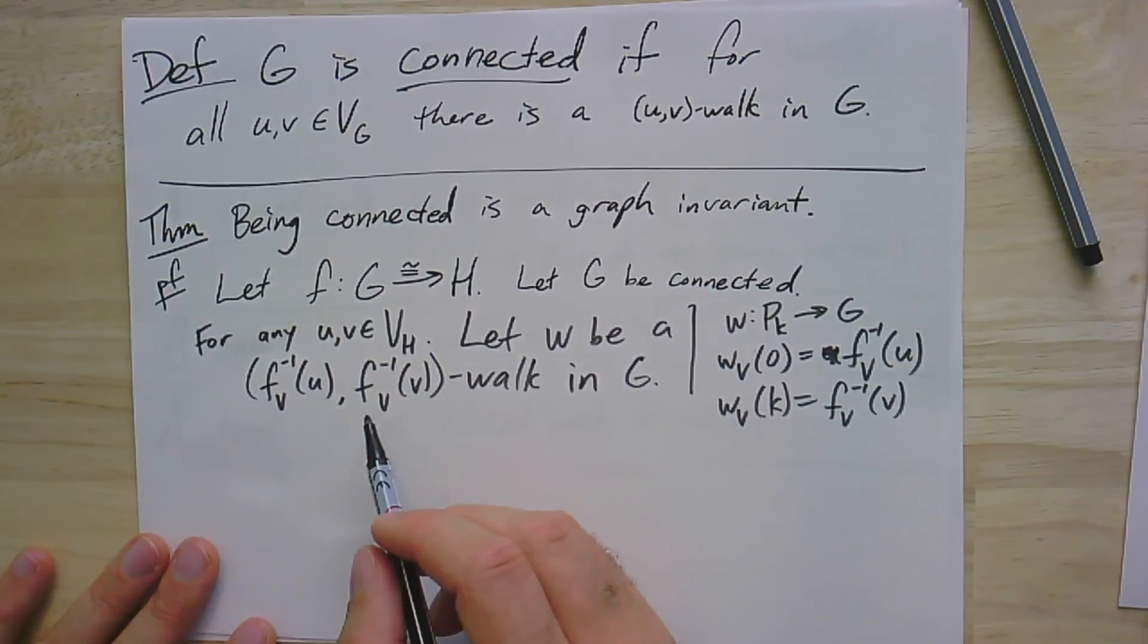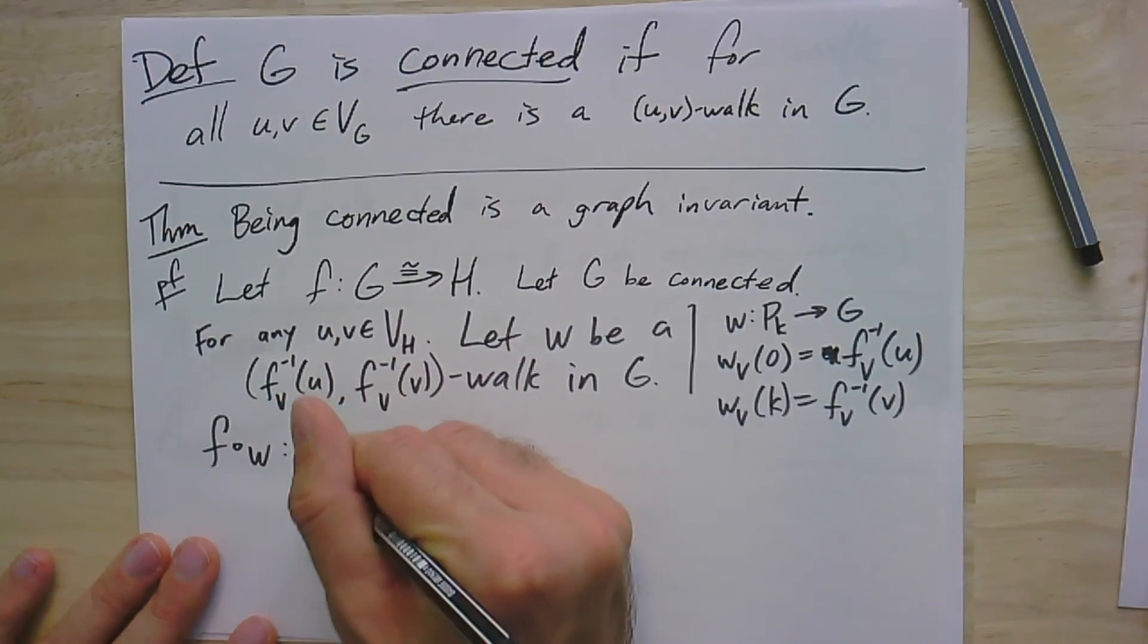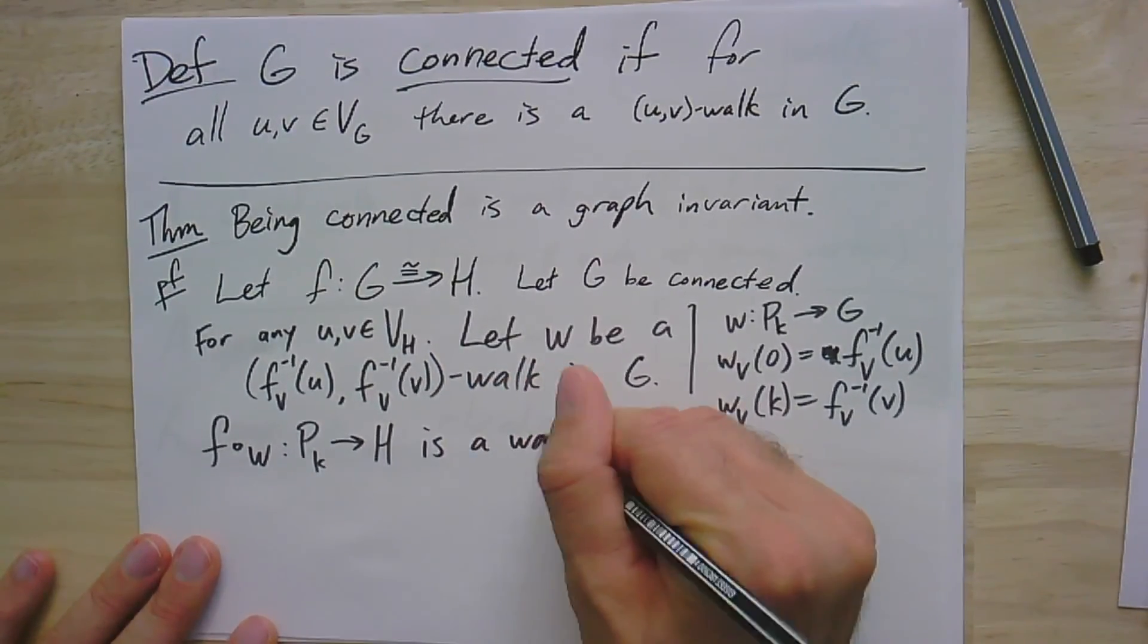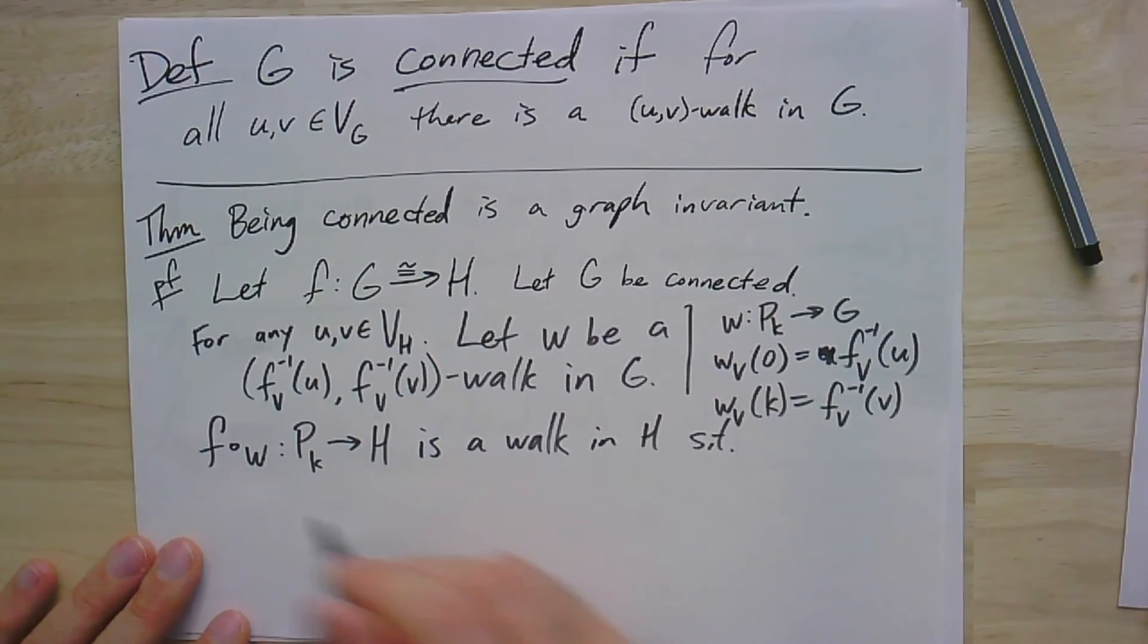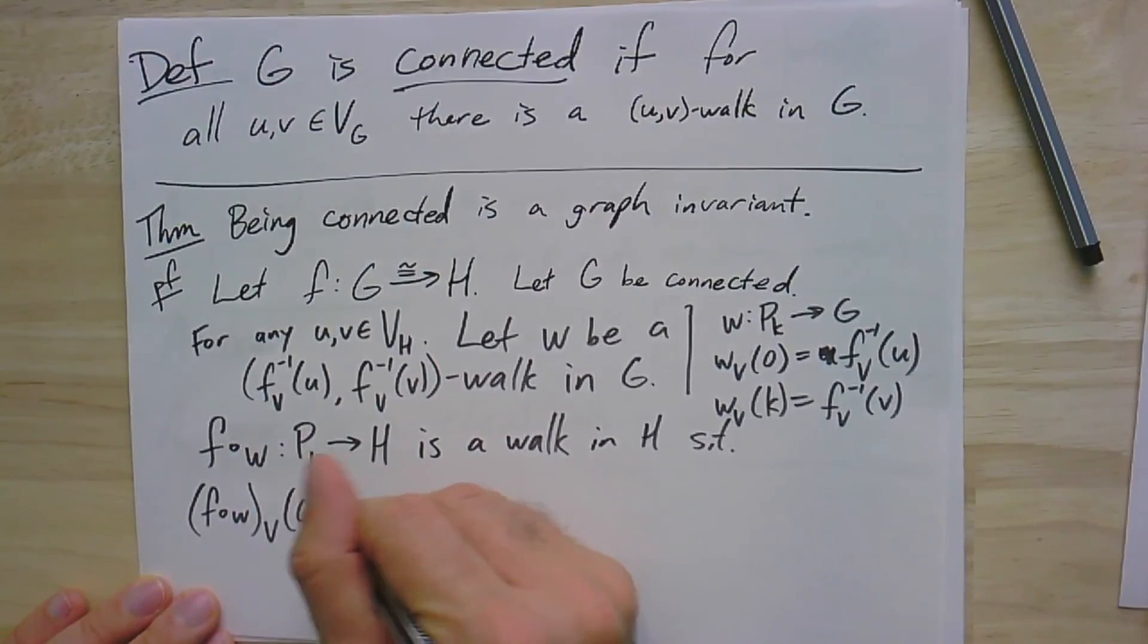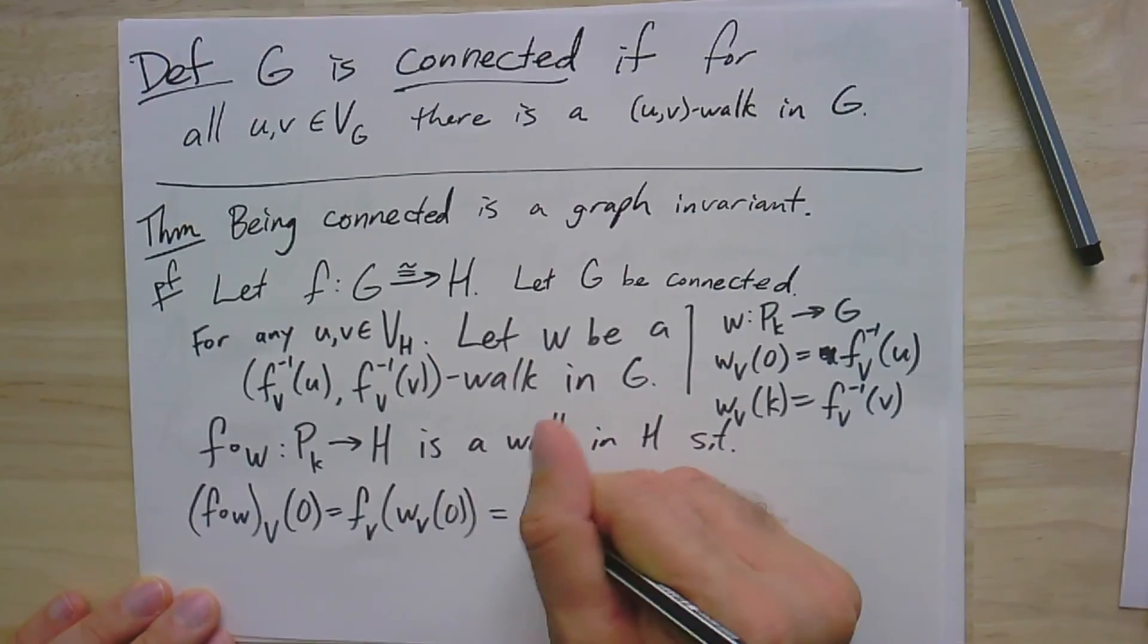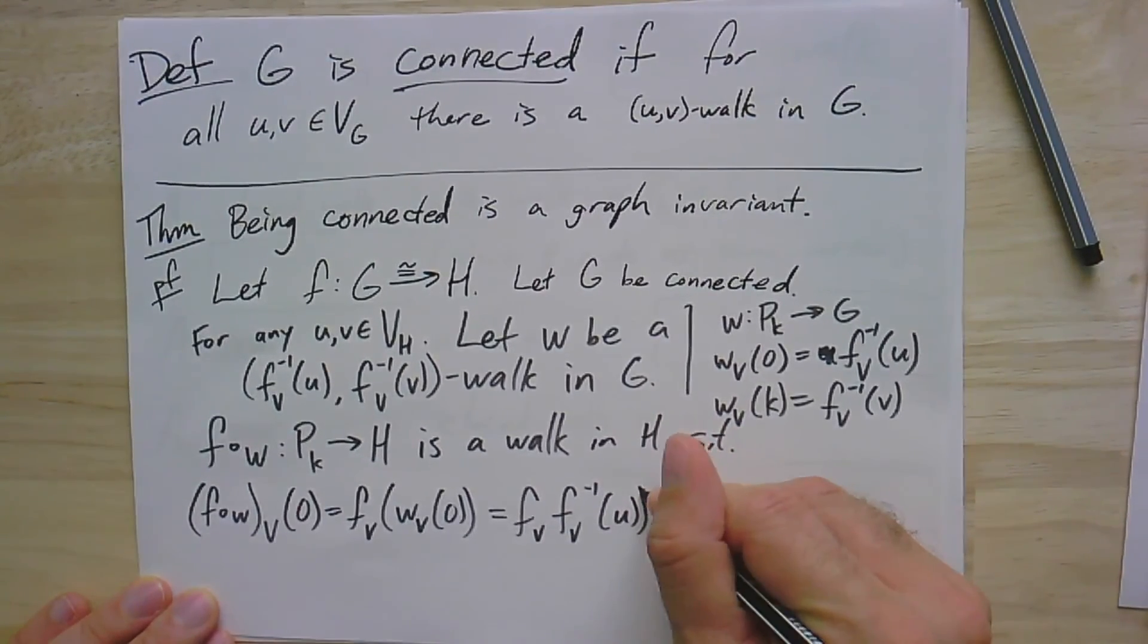So now what we do is we apply the same trick that we did for colorings. If you recall, we're just going to compose these two homomorphisms. So F composed with W is now a homomorphism from PK into H, so that means it's a walk. And it's in the graph H, and it has this property now that if I looked at on the vertex set, F composed W on the vertices, if I look at the start of this walk at zero, well that would be F_v of W_v of zero, which is F_v of F_v inverse of u, which is equal to u.